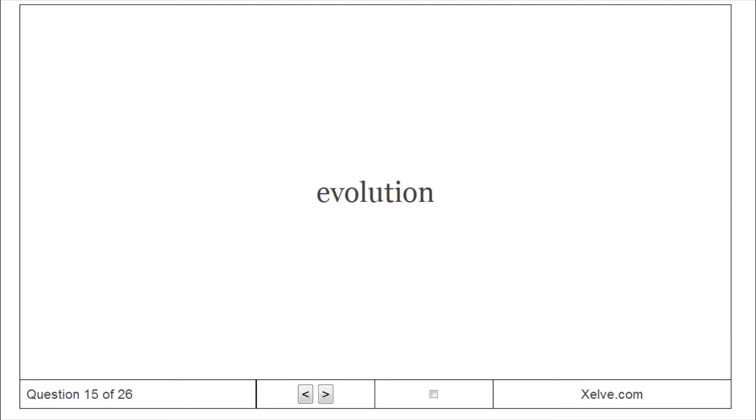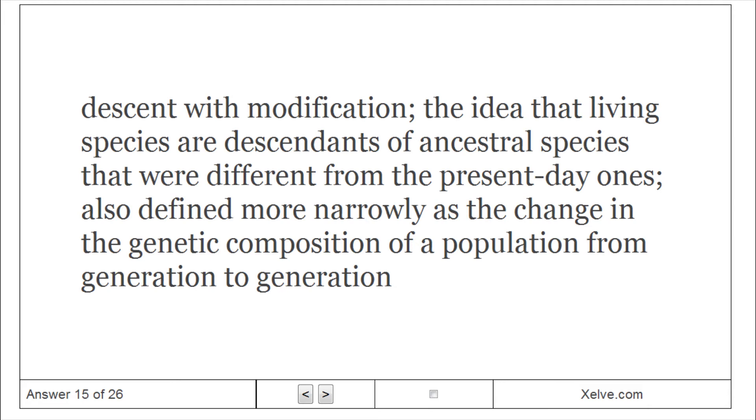Evolution. Descent with modification. The idea that living species are descendants of ancestral species that were different from the present-day ones, also defined more narrowly as the change in the genetic composition of a population from generation to generation.